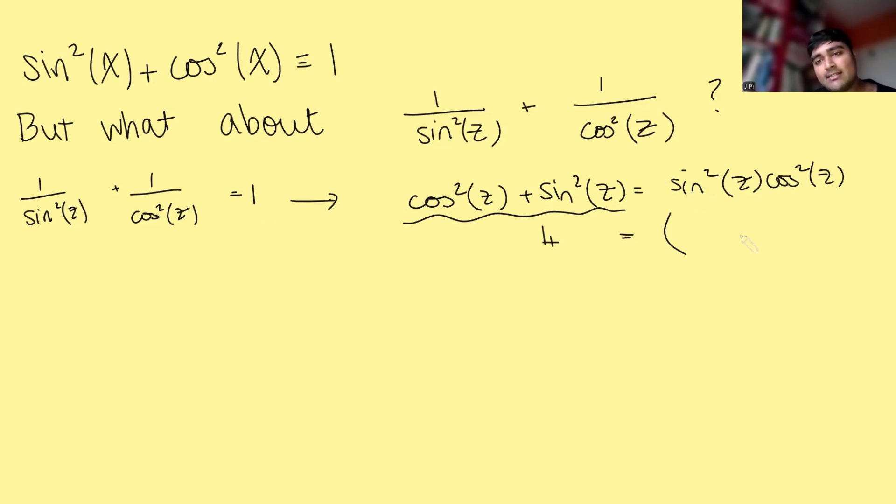And then what I can do with that is factor out or realize that that's a perfect square. It's 2 sine z cos z all squared. And now, so I've got 4 equals that. So that tells me that if I square root both sides, 2 sine z cos z is plus or minus 2.